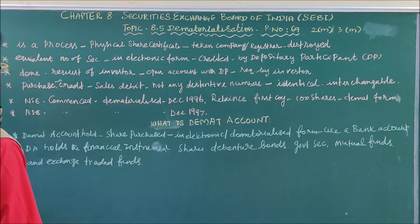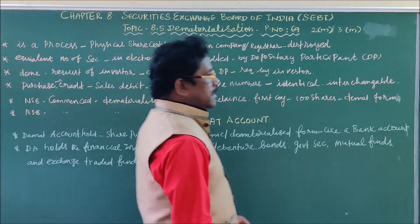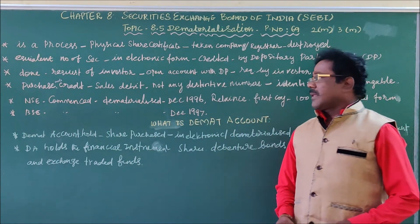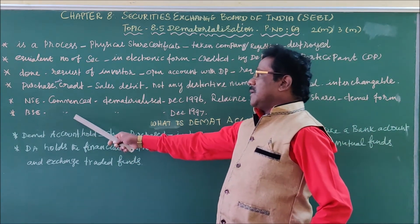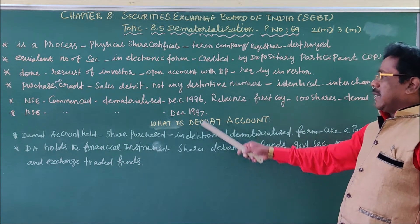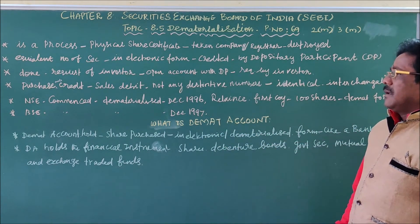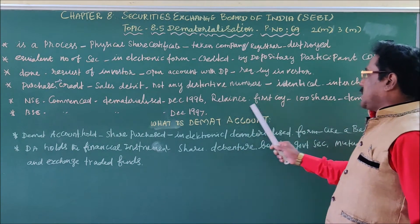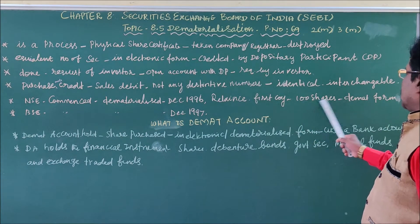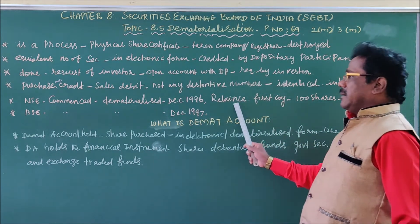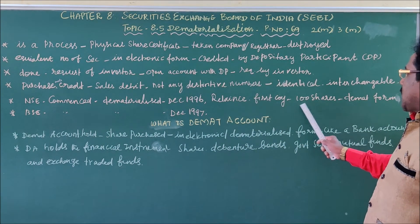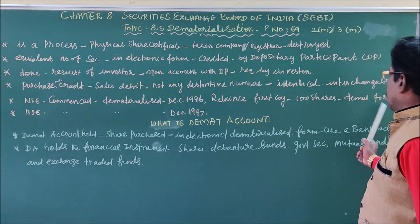The National Stock Exchange commenced its business in electronic format in December 1996, whereas the Bombay Stock Exchange commenced its business in dematerialized format in December 1997. The Reliance company was the first company which made 100% of its trading and sale of shares in the demat form.